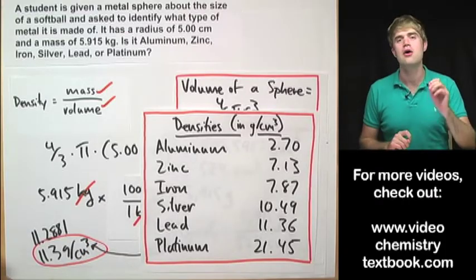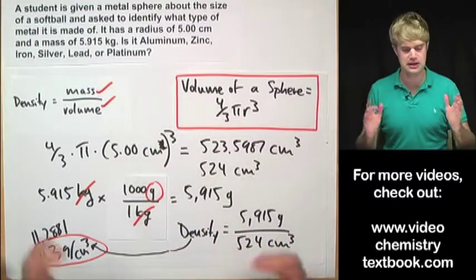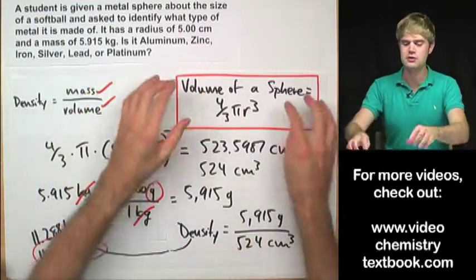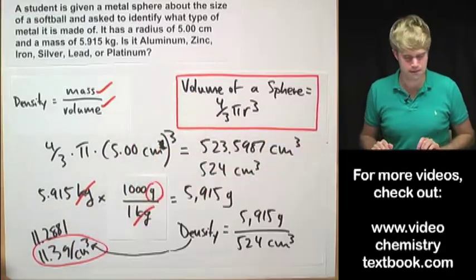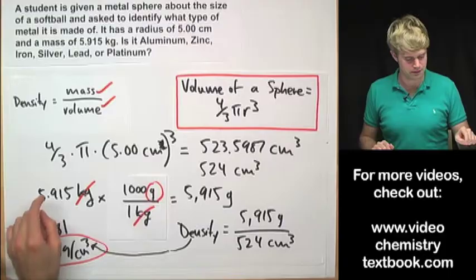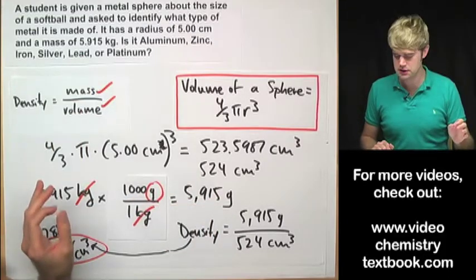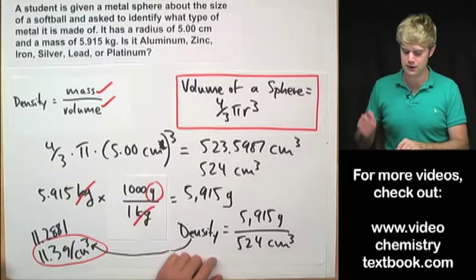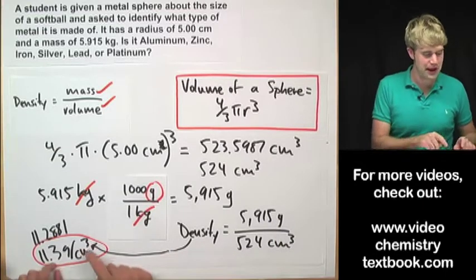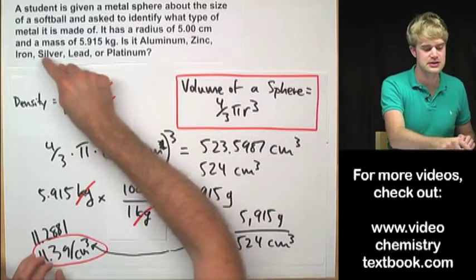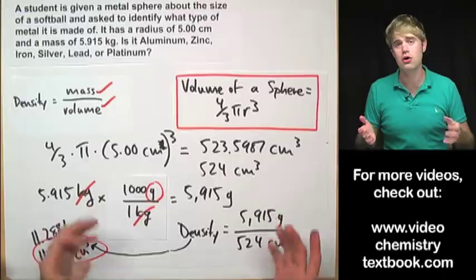So we can determine what type of metal something is made of by calculating its density and to do that here we had to use the equation for volume of a sphere to get that volume. Then we had to convert from kilograms to grams to figure out what the mass of this piece of metal was and then finally we can do the density with mass divided by volume and compare this to the densities of all of these metals. You can find these densities in a book or on the internet.